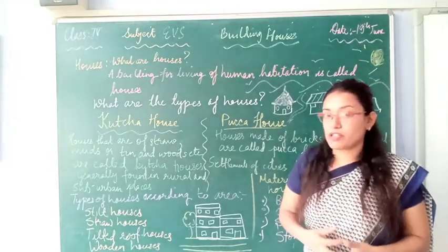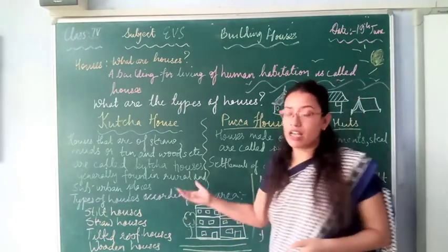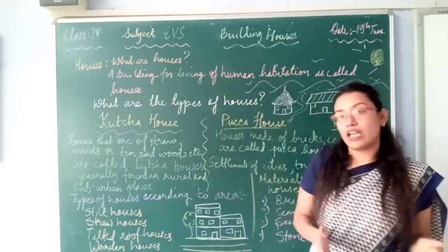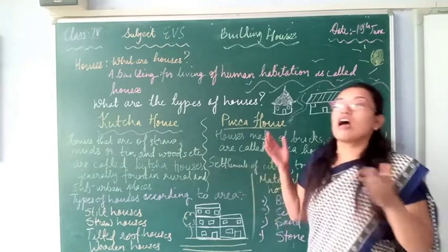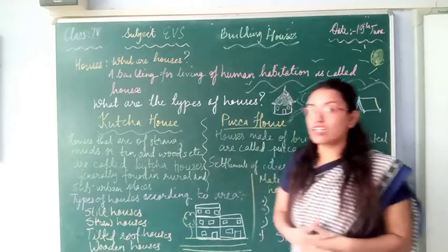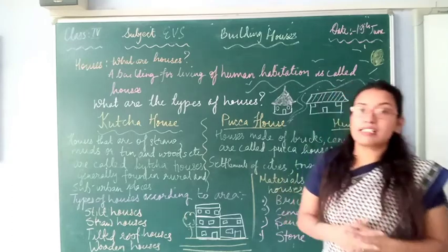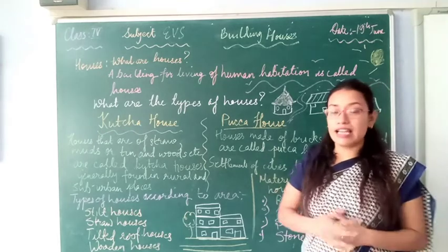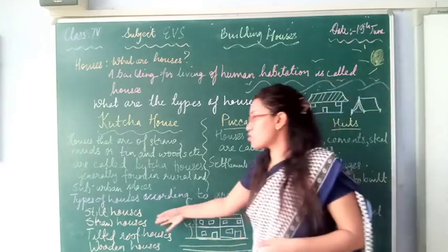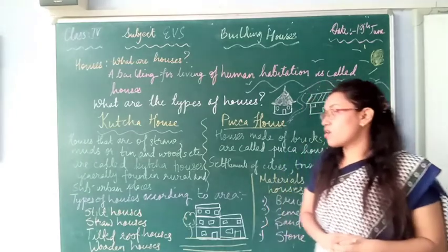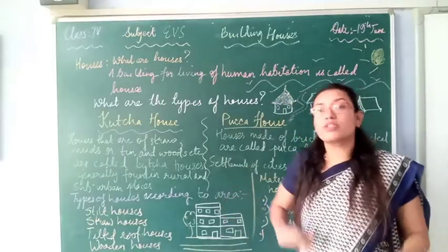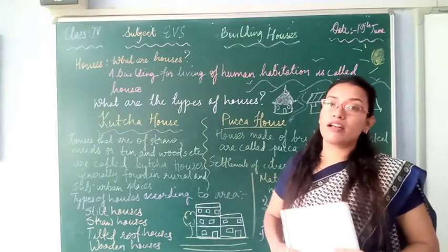Now we are going to study the different types of houses. In your book you can see there are stilt houses, straw houses, wooden houses, and tinted roof houses. According to the area, not everywhere do people have pakka houses. Different types of houses depend on different areas and climatic conditions — some climates are very hot and extreme, some are cool, some areas are plains, and some are high hilly altitudes. So there are different types of houses according to where people stay.